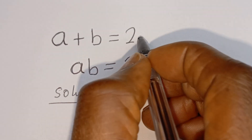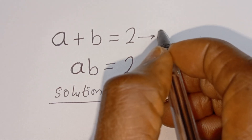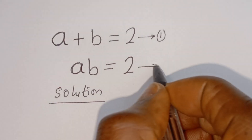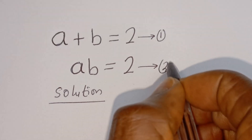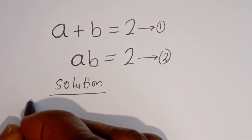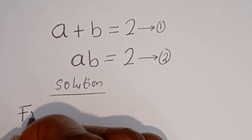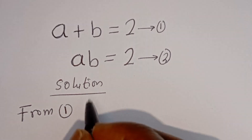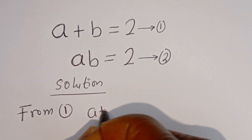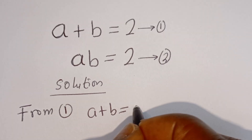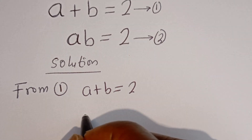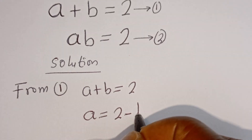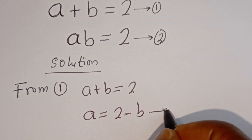Solution. A plus B is equal to 2 — let's call this equation 1. AB is equal to 2 — let's call this equation 2. Then from equation 1, A is equal to 2 minus B. Let's call this equation 3.